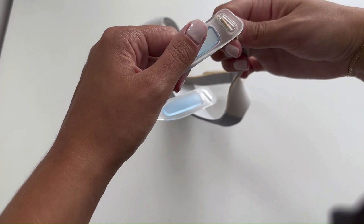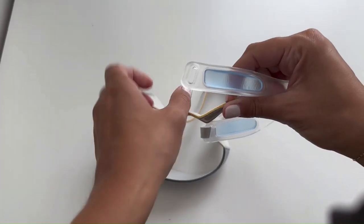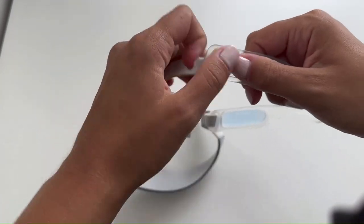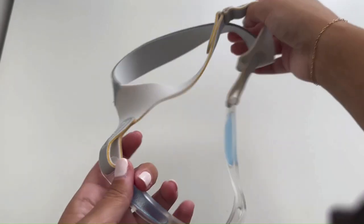To attach the frame and headgear, use the Velcro straps included on the headgear and loop them through the openings in the frame. Attach your cushion and tubing and your CPAP mask will be ready for therapy.